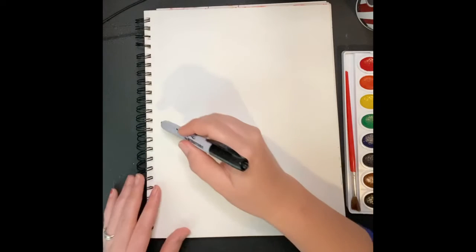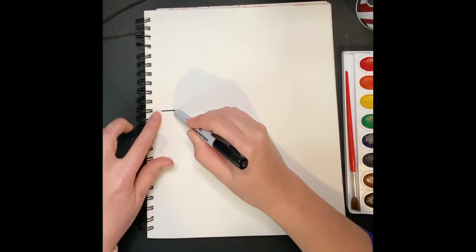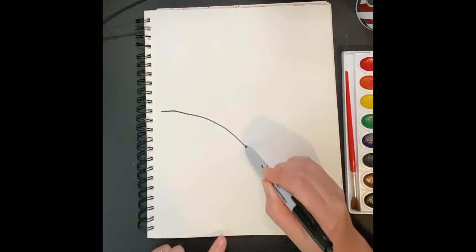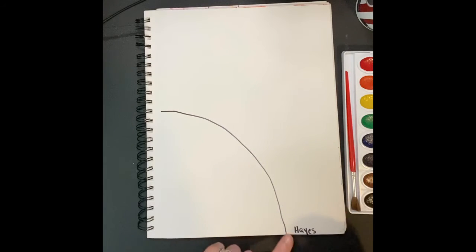And now I'm going to draw my landscape. I want it to kind of be like mountains. So I'm going to draw a curved line from about halfway up the page over here all the way down next to my name.